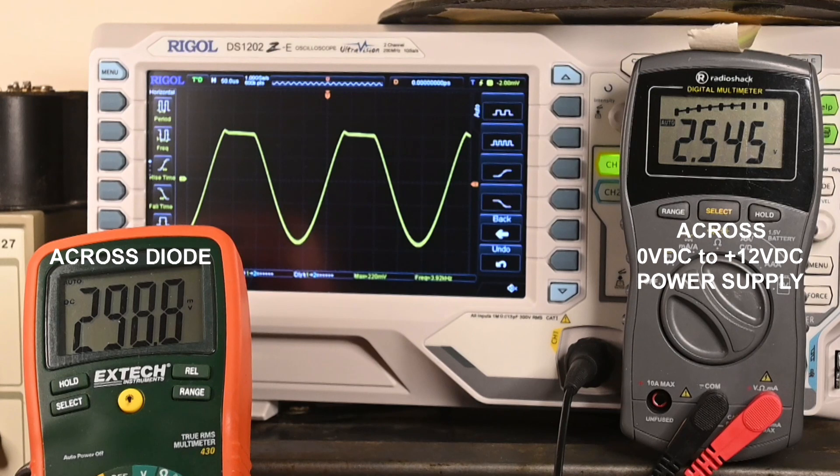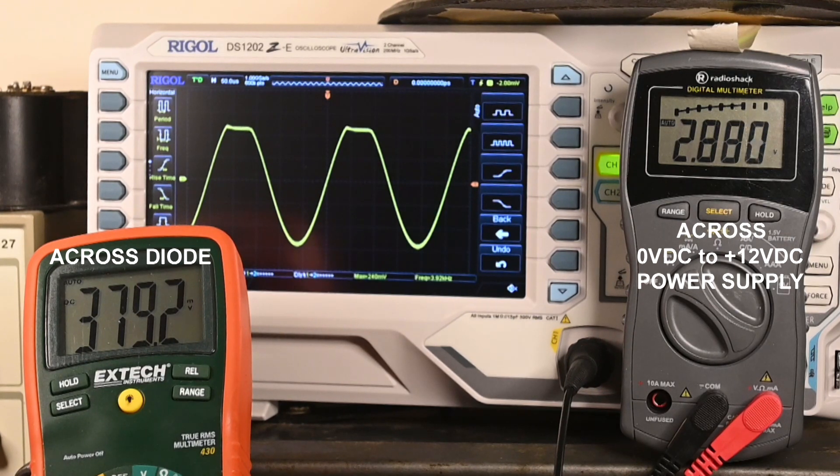I'm up to almost 3 volts total. And now we're at 0.4 across the diode. And that signal is looking real close to a sine wave.